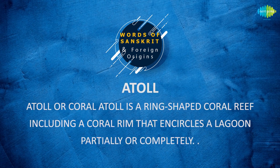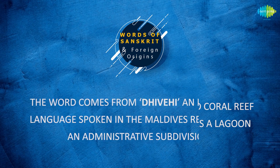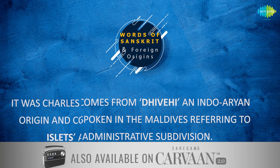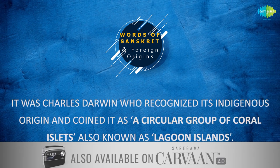Atoll, or Coral Atoll, is a ring-shaped coral reef including a coral rim that encircles a lagoon partially or completely. The word comes from Dhivehi, an Indo-Aryan language spoken in the Maldives, referring to an administrative subdivision. It was Charles Darwin who recognized its indigenous origin and coined it as a circular group of coral islets, also known as lagoon islands.